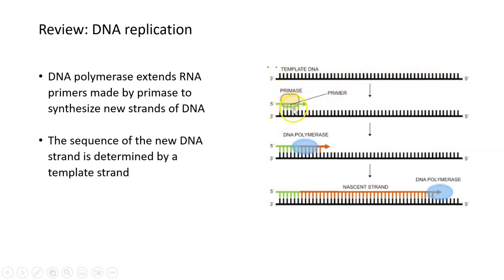Here you can see the template strand of DNA. Here's primase, this enzyme, which makes an RNA primer in green. Then DNA polymerase is able to add nucleotides to this existing RNA primer and extend that piece of DNA in the five prime to three prime direction.